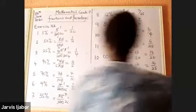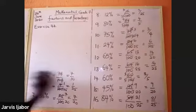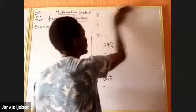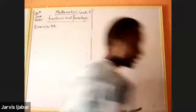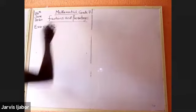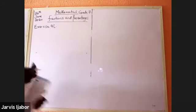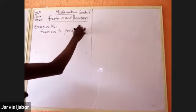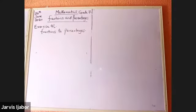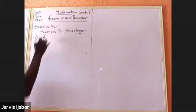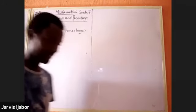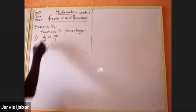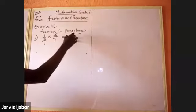So let's go to Exercise 4L. In Exercise 4L, we are required to convert fractions to percentages. When converting a fraction to a percentage, you multiply by 100 over 1. For example, number one: one half times 100 over 1 gives you 50 percent.